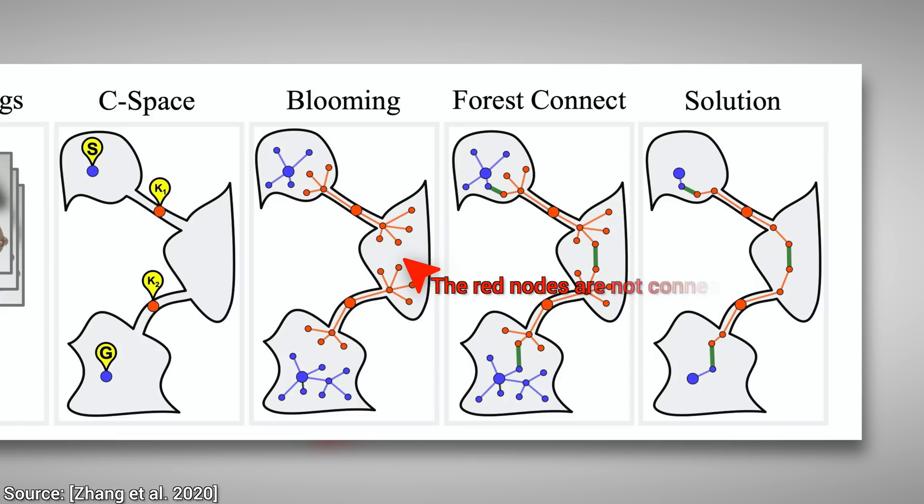But as you see, not all roads connect, or at least not easily. The Forest Connect step tries to connect these roads through collision-free paths, and now finally, all we have to do is find the shortest path from the start to the endpoint to solve the puzzle.